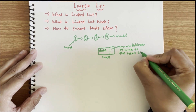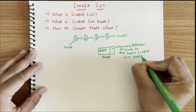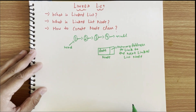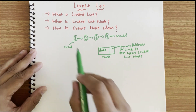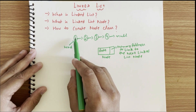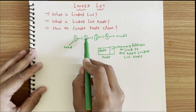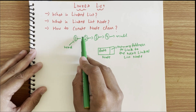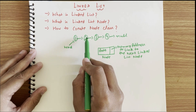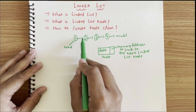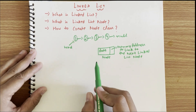The memory address is a link to the next linked list node. So mainly a node has two components: data and the memory address of the next node. If we look at the first node, it has data as one and it is also pointing to the memory address where the second node is present in memory. This is how links are formed between the different nodes of the linked list.